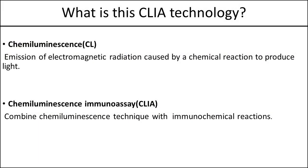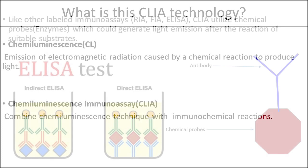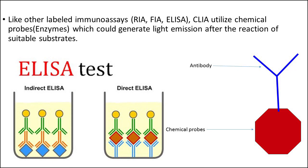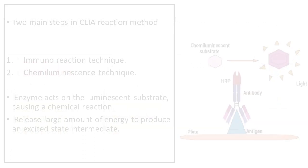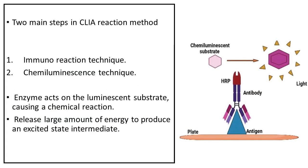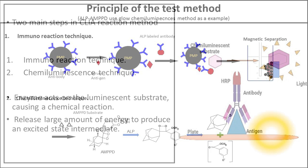Chemiluminescence is defined as the emission of electromagnetic radiation caused by a chemical reaction to produce light. Chemiluminescence immunoassay is an assay that combines chemiluminescence technique with immunochemical reactions. Similar to other labeled immunoassays, chemiluminescence utilizes chemical probes which can generate light emission through chemical reaction to label the antibody.